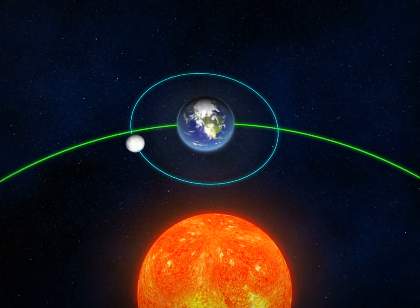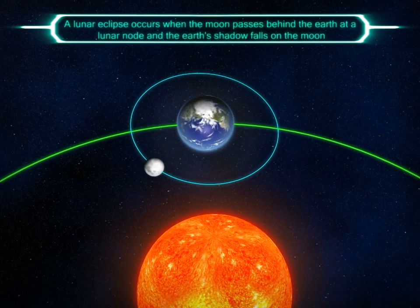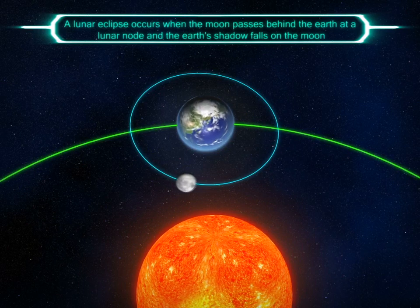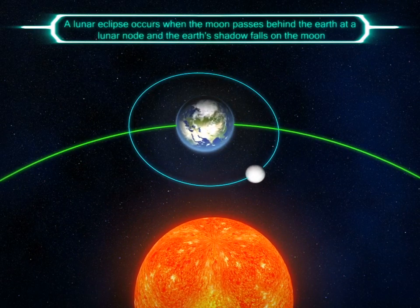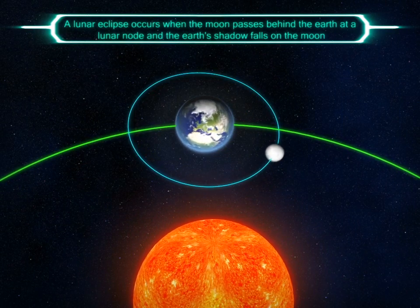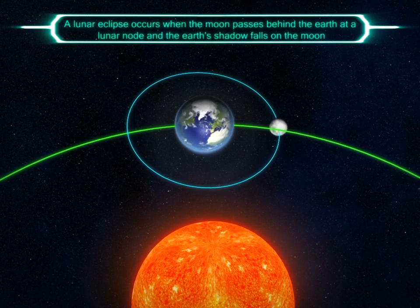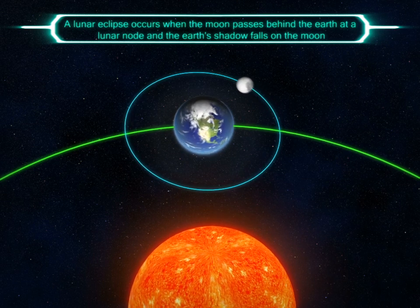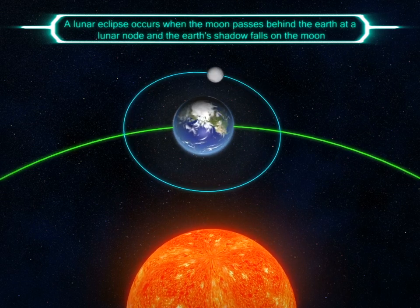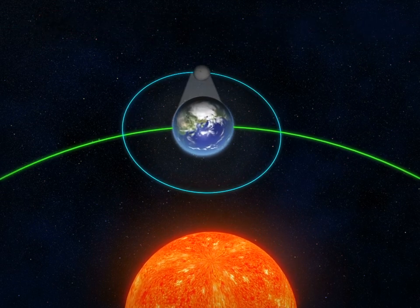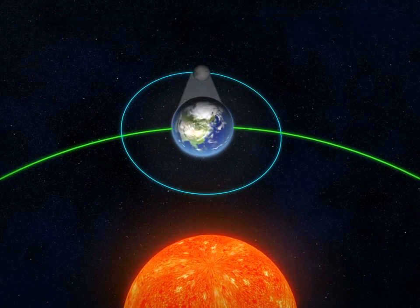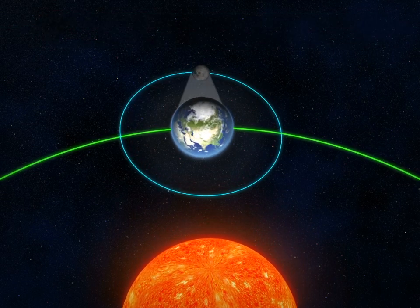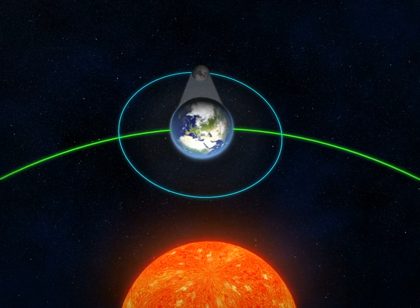A lunar eclipse occurs when the moon passes behind the earth at a lunar node and the earth's shadow falls on the moon. This can only happen when there is a full moon.